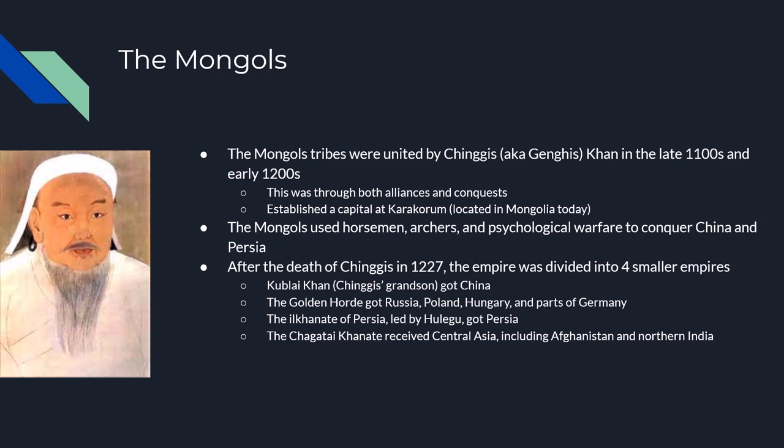Conservative estimates state that he was responsible for the mass extermination, famine, and death of over 20 million civilians. Genghis Khan was also very prolific in the bedsheets — he has almost 20 million living descendants, which equates to about 0.5% of the entire world's population. So Genghis is a big name.